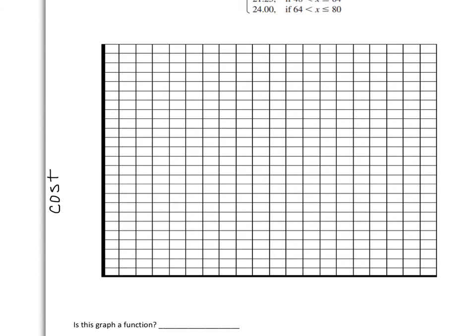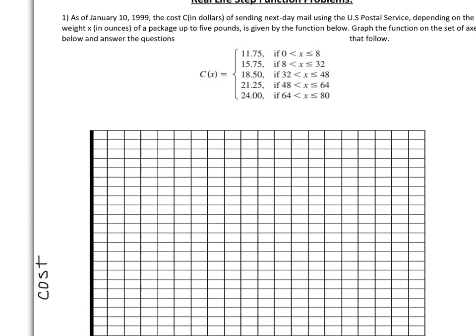Okay. Well, first we want to figure out what's going to go on the X-axis and what's going to go on the Y-axis. Well, they tell you the weight is in the X-axis and the cost is the Y-values. So let's label that first. Cost and then weight.